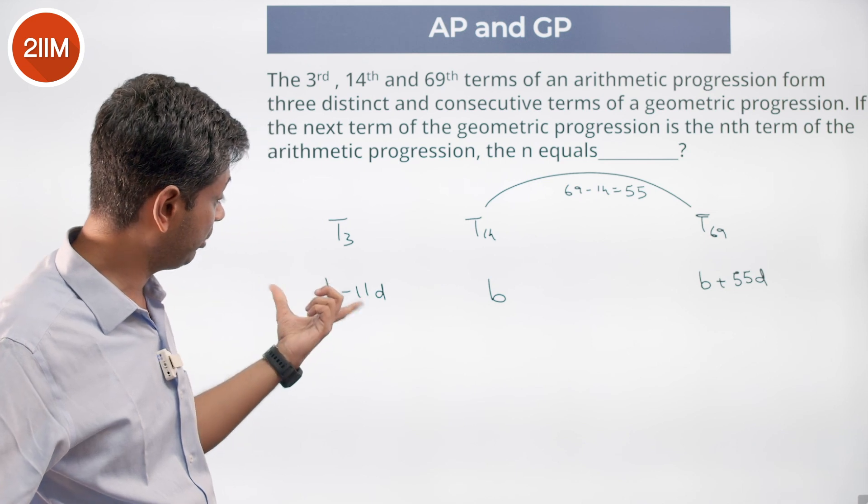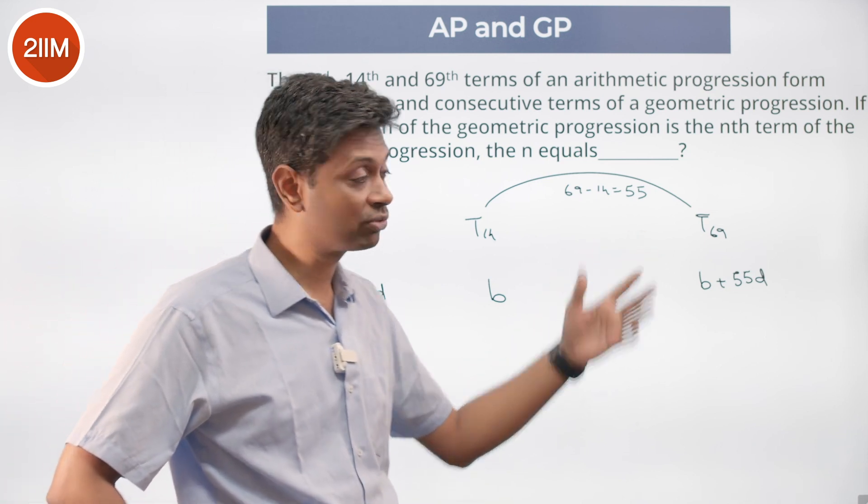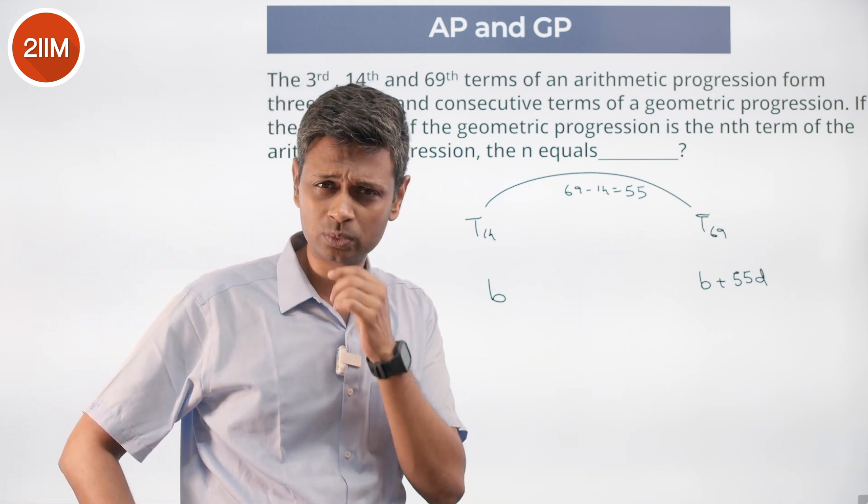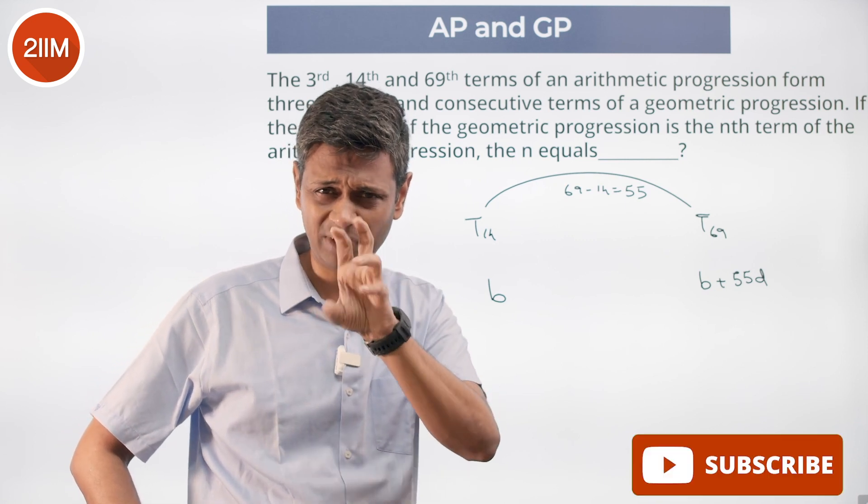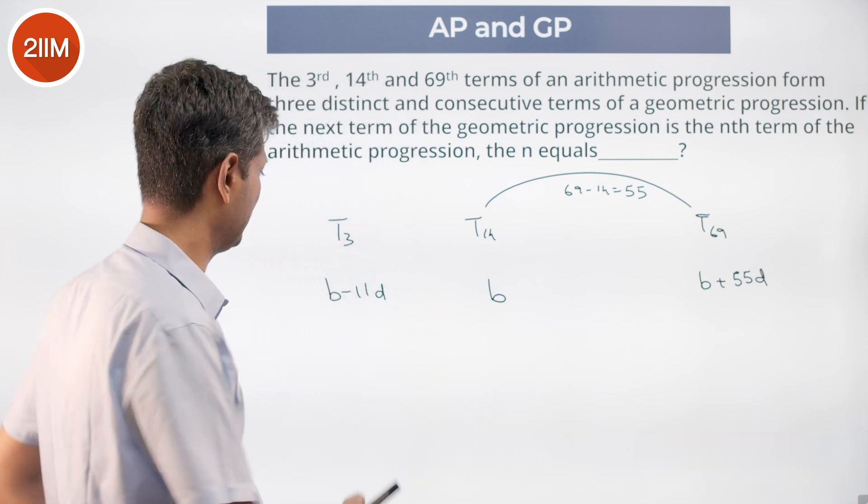So b square equals b minus 11d into b plus 55d. Something to go with, something that I can simplify it and get some value of d. Let us see if we can get that.